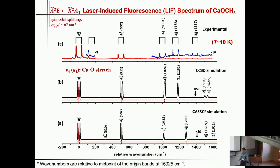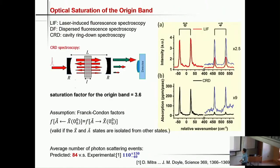The strongest transitions are due to transitions to the Ca-O stretch mode because it has the largest Franck-Condon factor. When we're doing the experiment, we're worried that because we're using pulsed lasers, the strong origin transition might be saturated. So my students also took a cavity ring-down spectrum of the X to A transition, and we compared the LIF spectrum to the cavity ring-down spectrum. We found that the origin band was power-saturated by a factor of about 3.6.